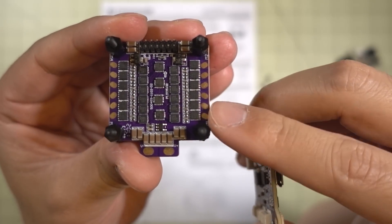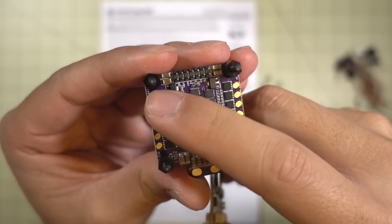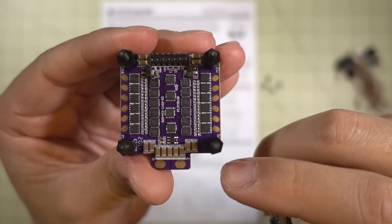Over here on the 4-in-1 ESCs you've got your motor wire connections here for your motors. Very easy to solder. It should be a pretty clean build.